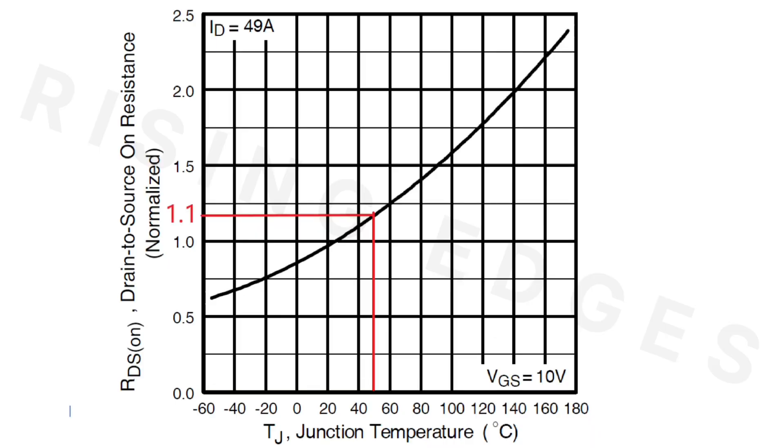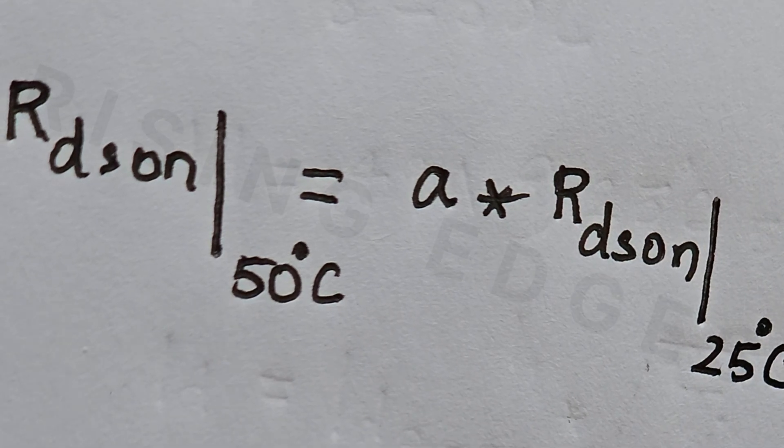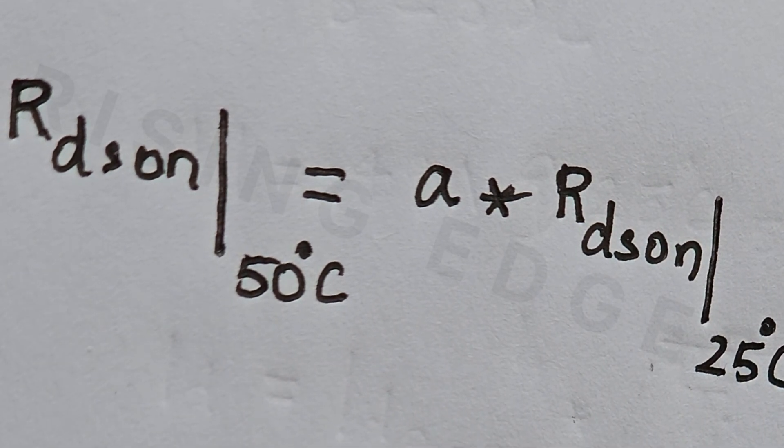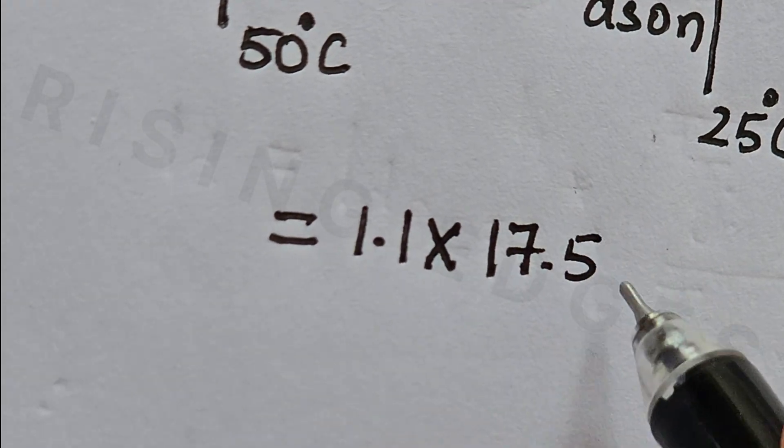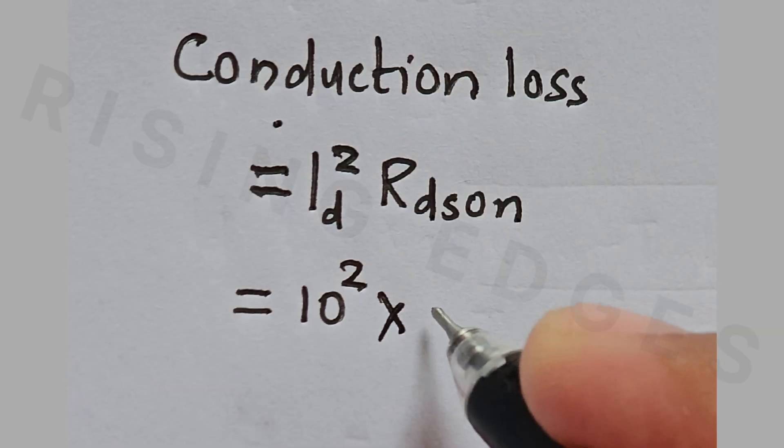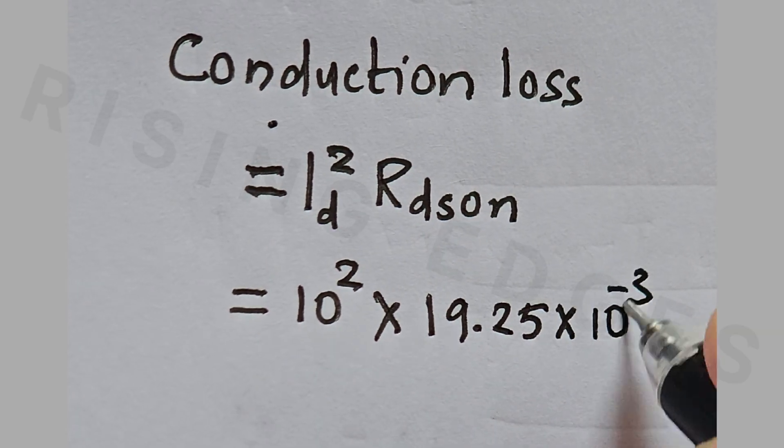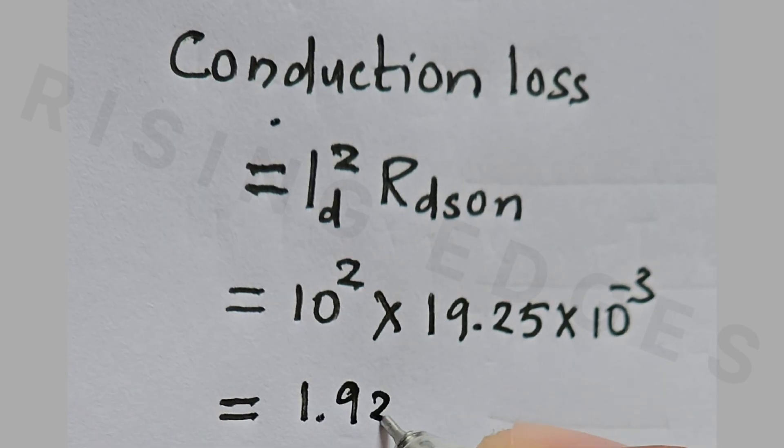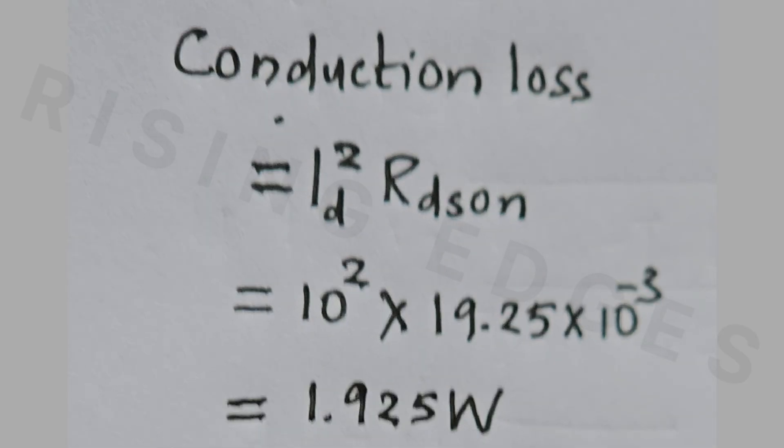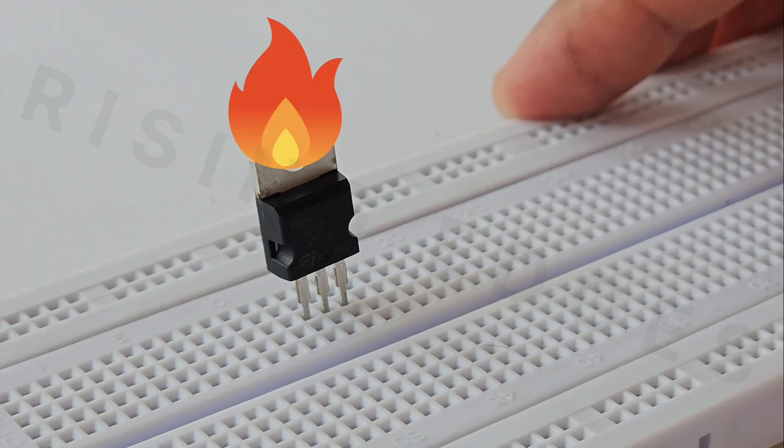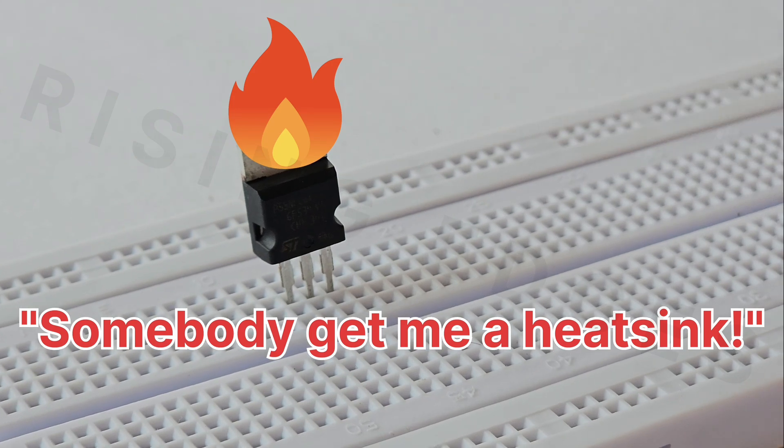Now, let's look at RDS-ON. Based on the normalized ON resistance vs temperature graph, RDS-ON increases by about 1.1 times at 50C bringing the effective resistance to around 19.25 milliohms. Using this value, we can estimate the conduction loss, which comes out to be approximately 1.925W.